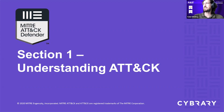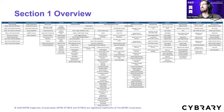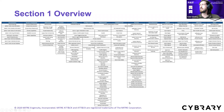Section one: understanding ATT&CK. This is what ATT&CK looks like. When you see people talk about ATT&CK or see it presented, this is usually the view you see — the classic tabular format where we have tactics across the top and techniques running down the bottom. When talking about ATT&CK, this is the summary view we're often referring to.